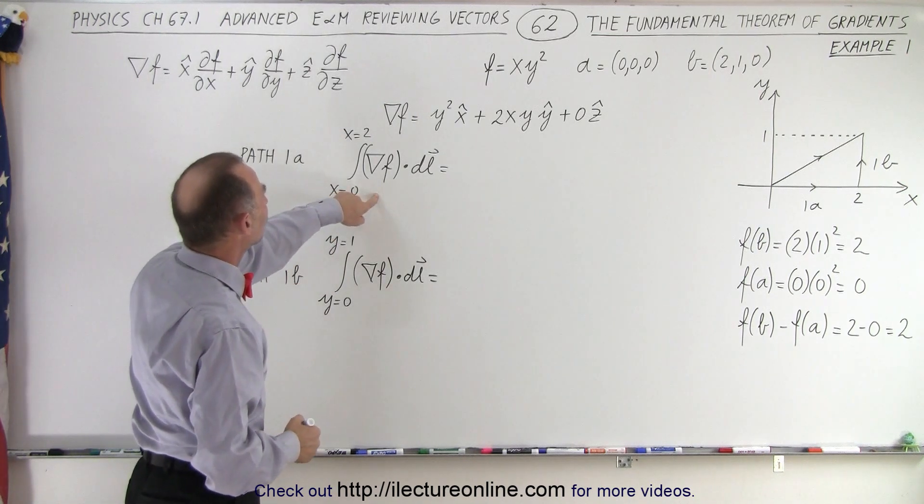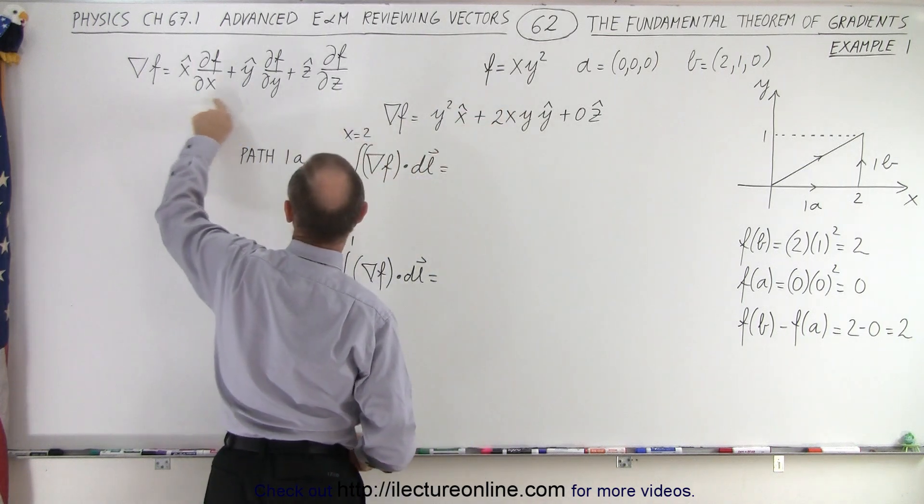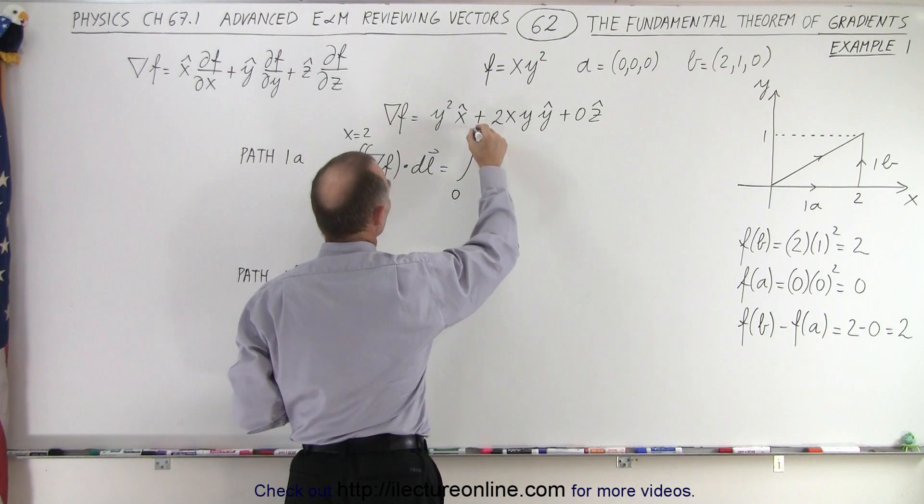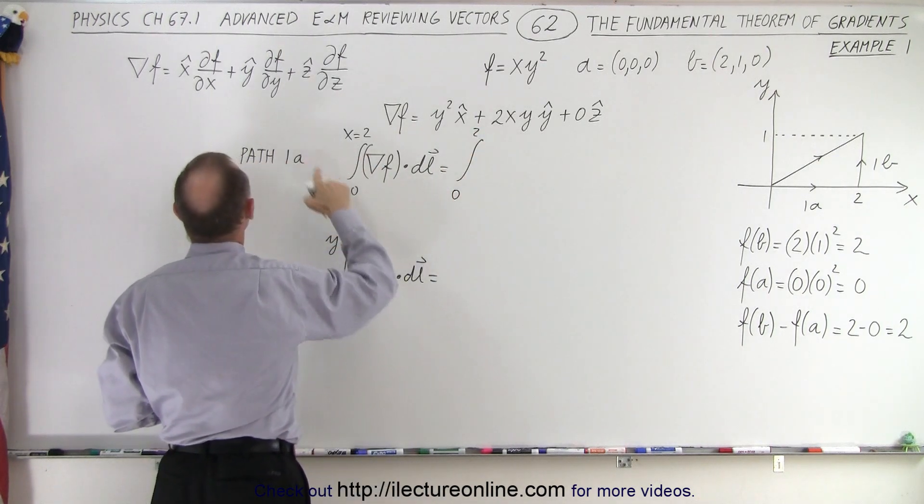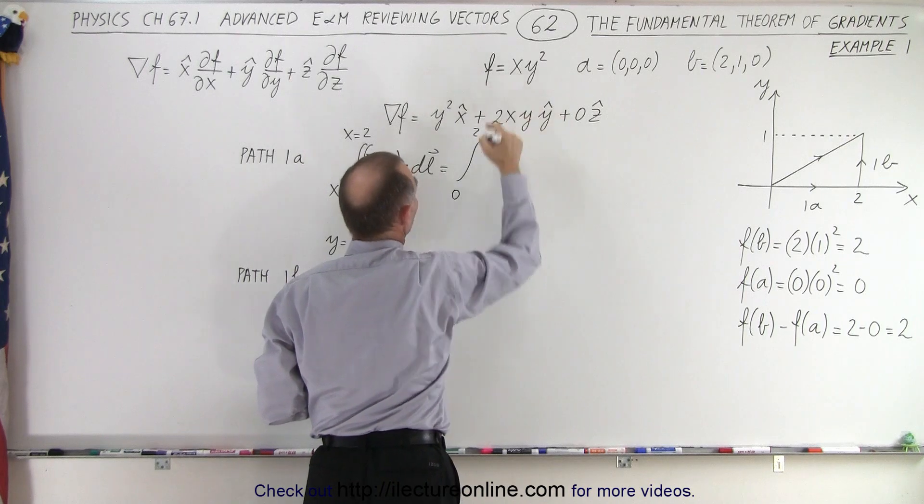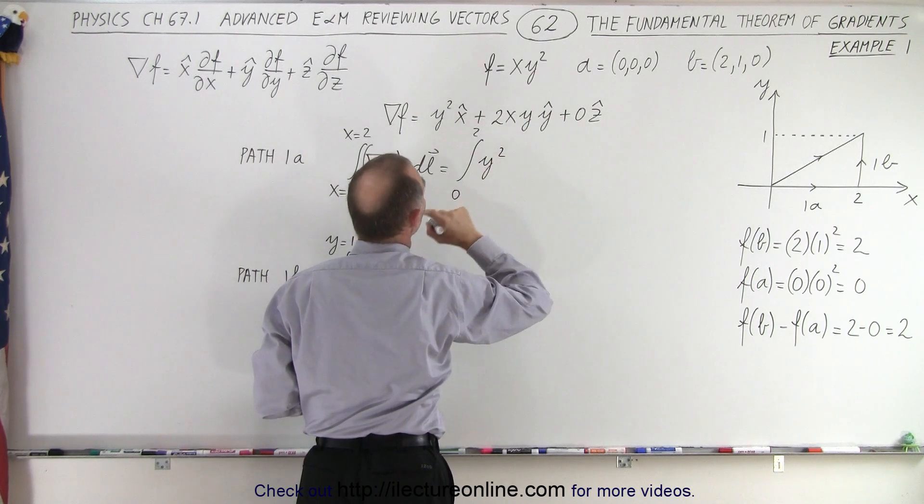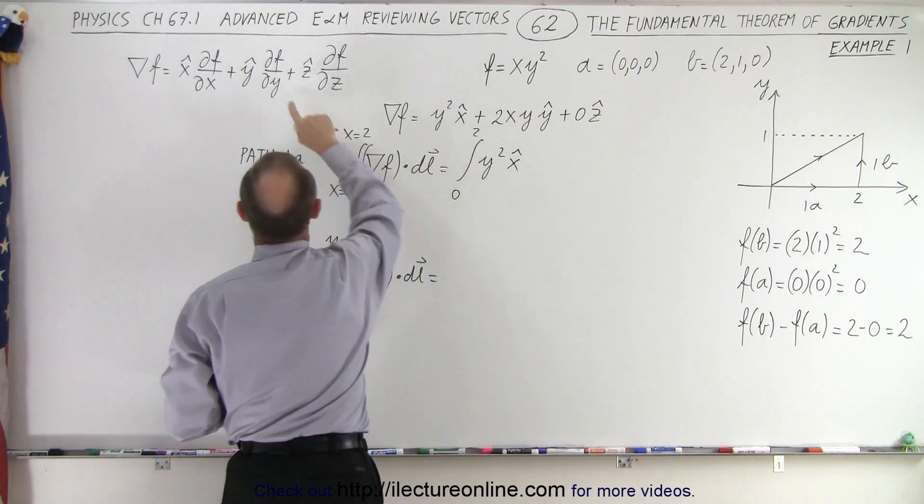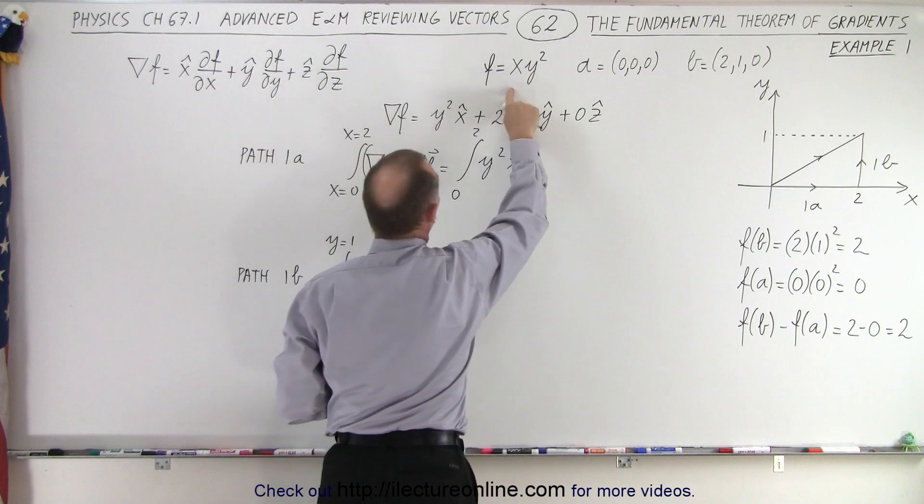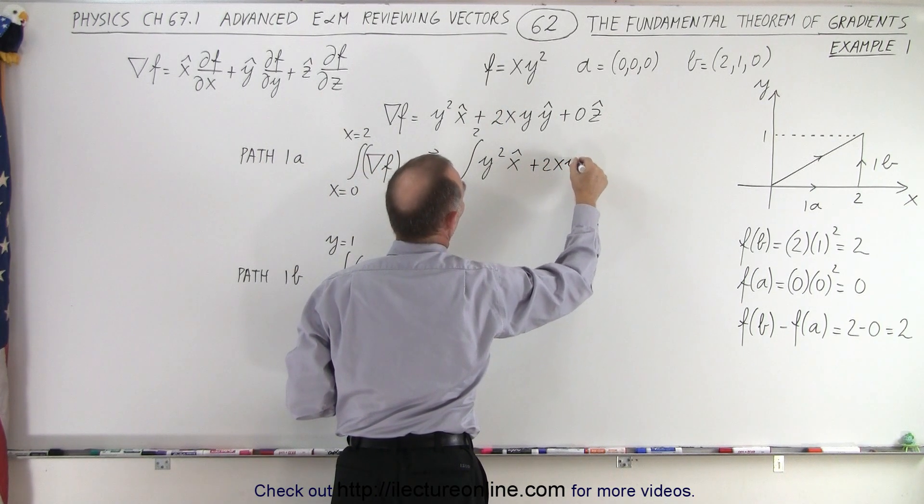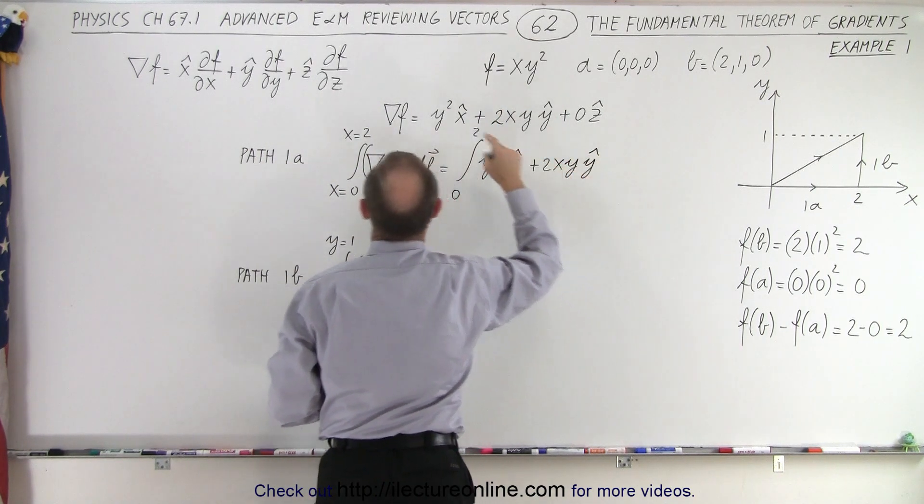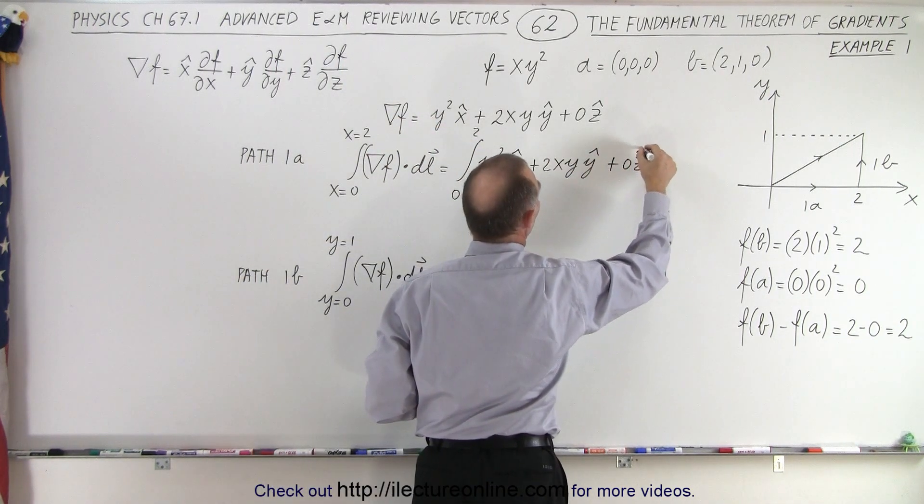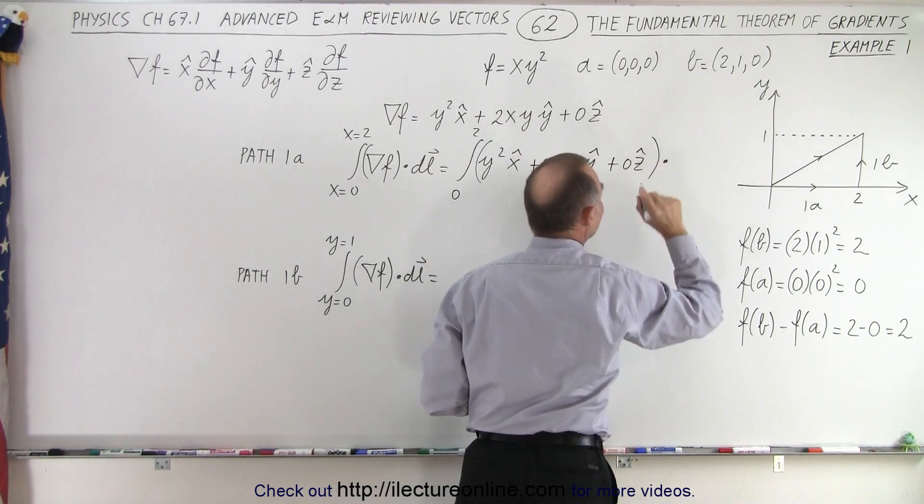Alright, so the gradient of the function, the function is defined over here, so here's the definition of the gradient. We take then the integral from 0 to 2, this is for the x value. The partial derivative of the function with respect to x, that would be y squared. And of course, that would be times the x unit vector. The partial derivative of the function with respect to y, that would be plus 2xy with the y unit vector. And the partial derivative of the function with respect to z, that would be plus 0 in the z direction.